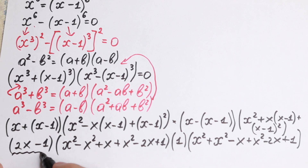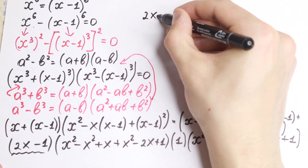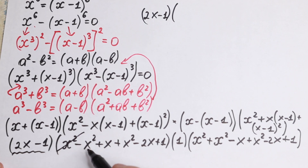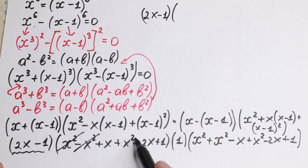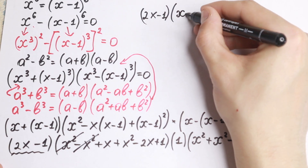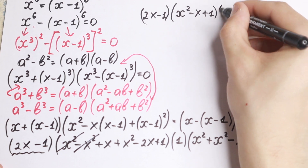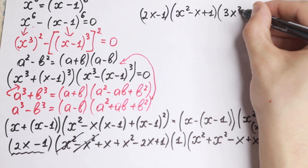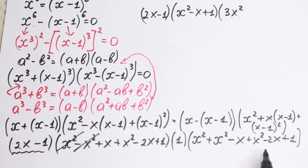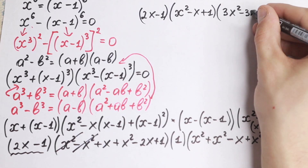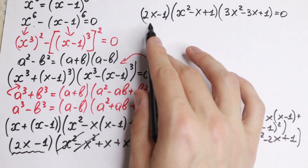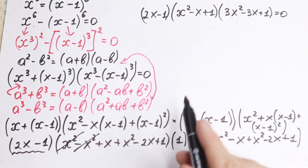Let's simplify each parenthesis. The first gives us 2x minus 1. The middle factor simplifies — x squared minus x squared cancels — leaving x squared minus x plus 1. The second factor x minus x minus 1 simplifies to 1. And the last factor simplifies to 3x squared minus 3x plus 1.